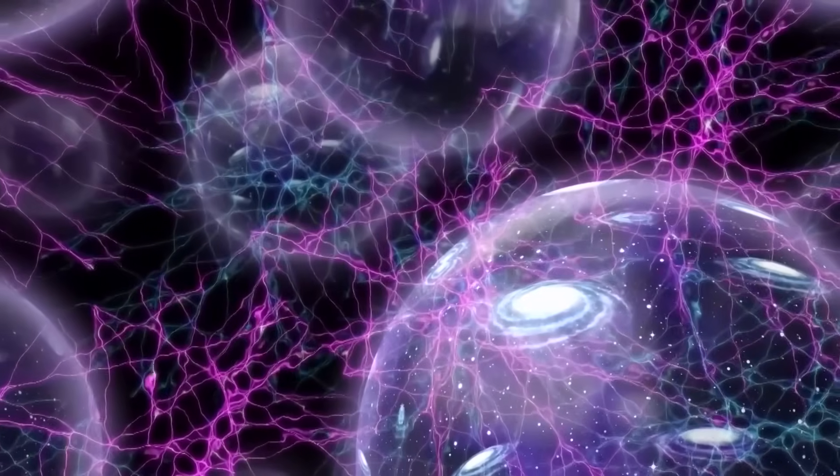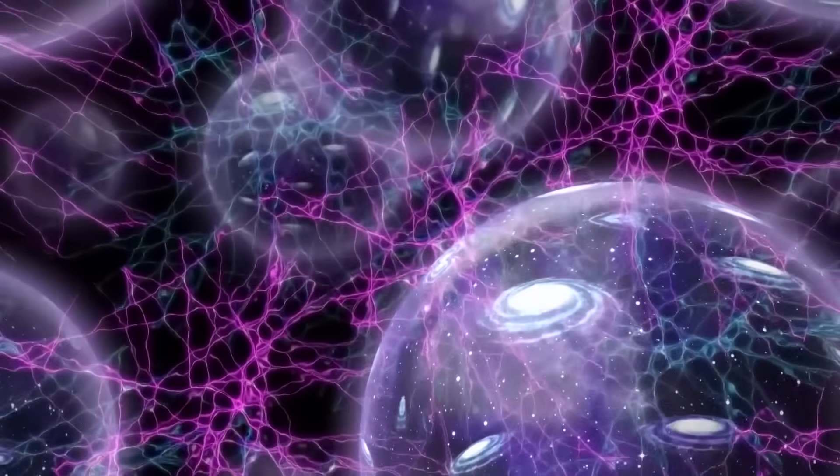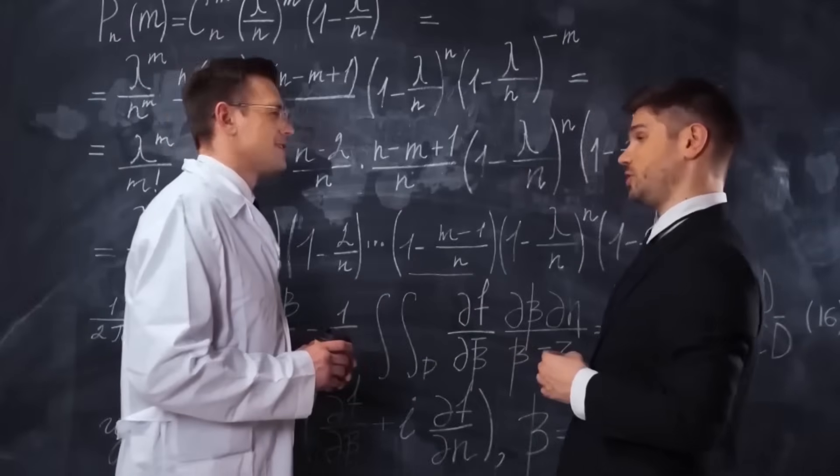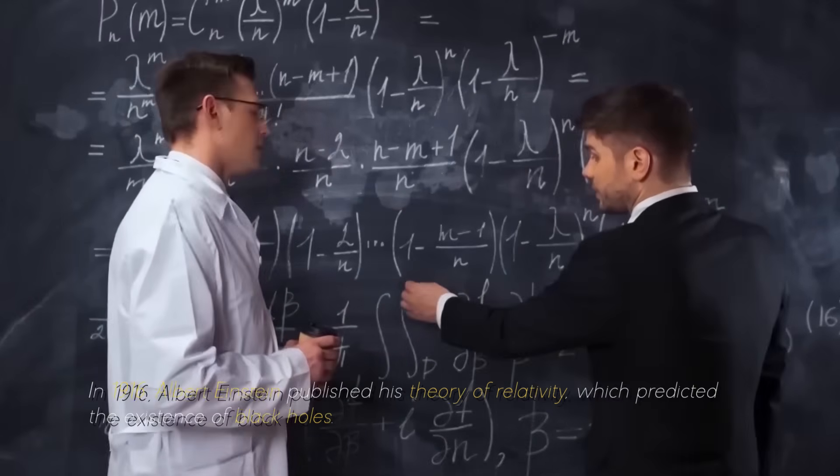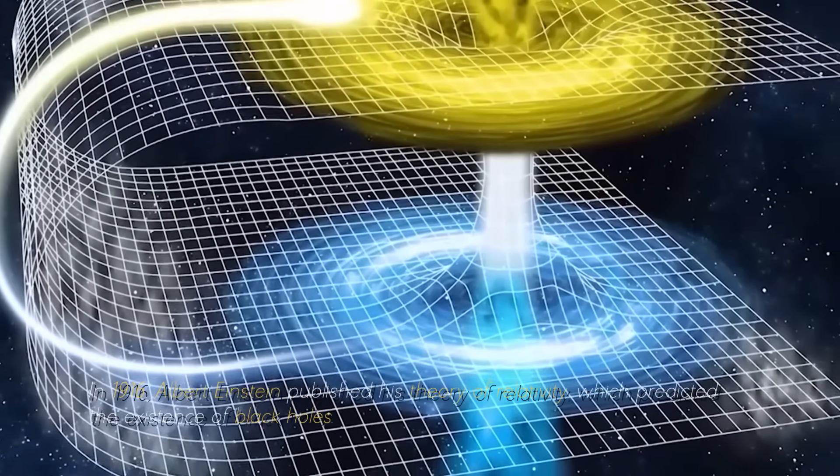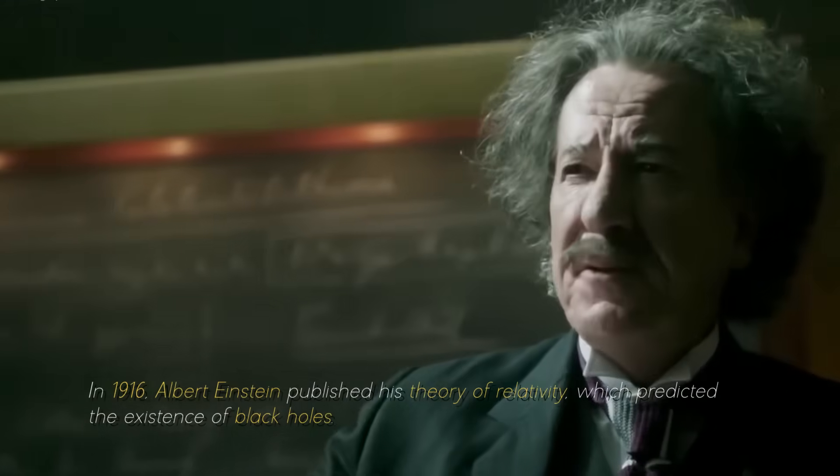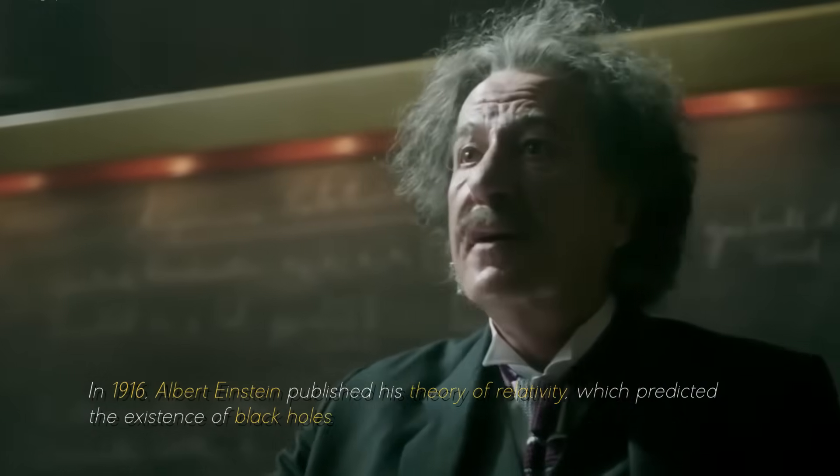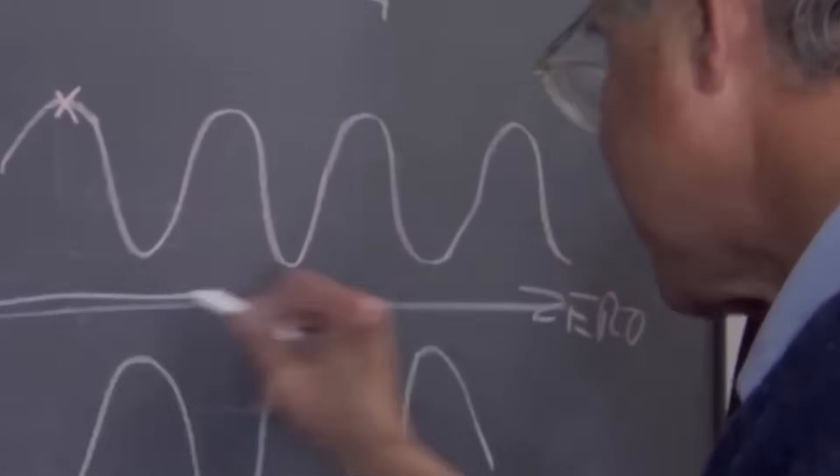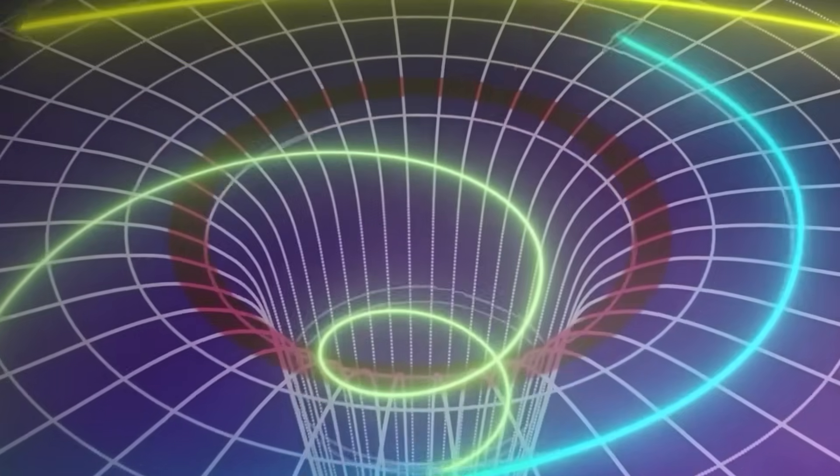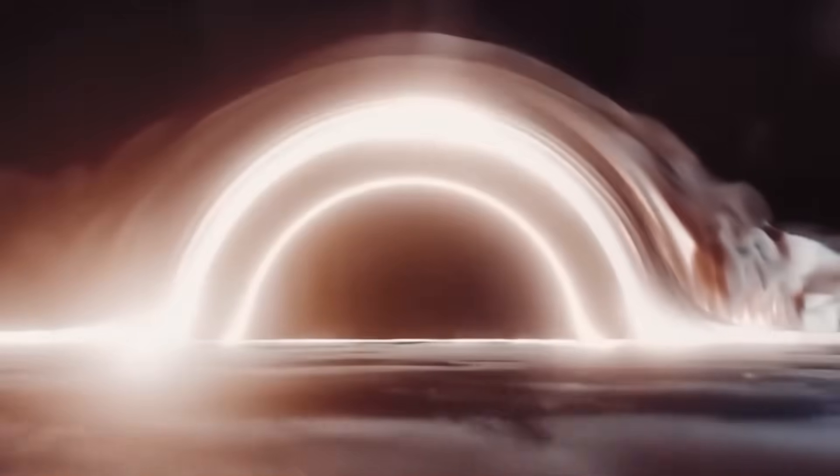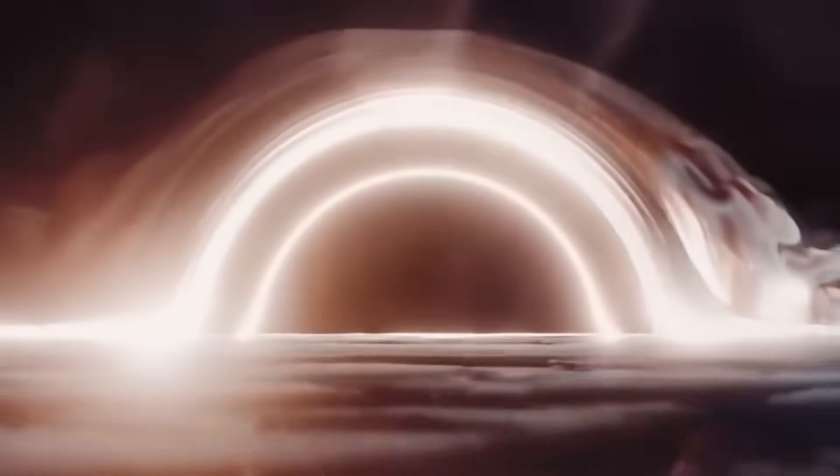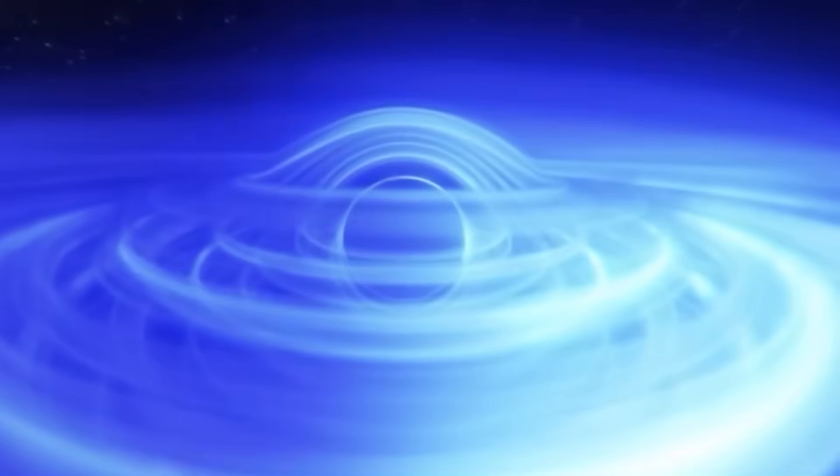Although many of us have a general idea of what black holes are, there are still some gaps in our knowledge. In 1916, Albert Einstein published his theory of relativity, which predicted the existence of black holes. At that time, the concept of black holes was purely theoretical. It was necessary to wait another 50 years for the scientific community to find evidence of their existence.